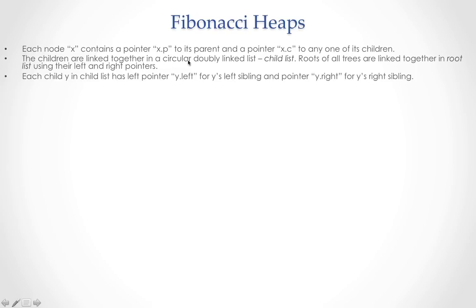Fibonacci heap tells us how to connect each node in this collection. Each node contains a pointer to its parent and a pointer to one of its children. Children are linked together in a circular doubly linked list, a child list, and roots of all these trees are also connected in a doubly linked list.